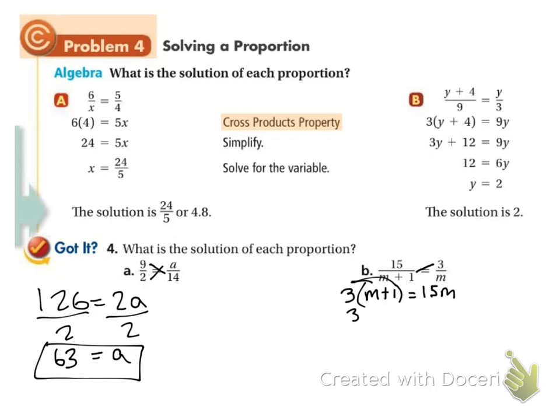Now I'll distribute in. I get 3m plus 3 equals 15m. Then I'm going to solve for m, so I need to get the m's to one side. I'll subtract 3m from both sides. So I get that 3 equals 12m, and then we divide by 12. So m equals 3 twelfths, but then we can simplify that. That's the same thing as 1 fourth. So m equals 1 fourth, and that would be your answer. Or 0.25, that would also work.